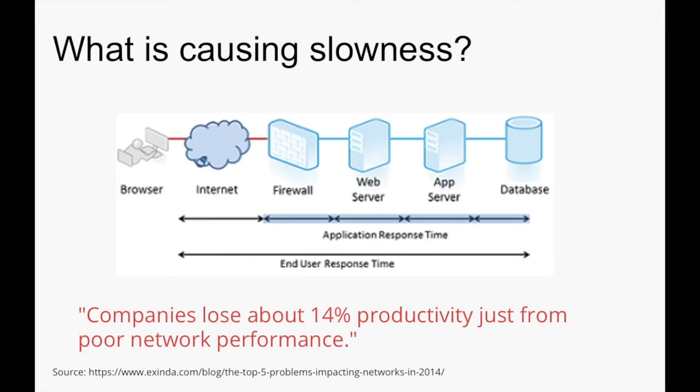Let's see some of the causes of the slowness. Looking at a basic enterprise network architecture, the issues can be in any section — on the firewall, web server, app server, or database. Based on a study, 14 percent of productivity is lost due to poor network performance issues.